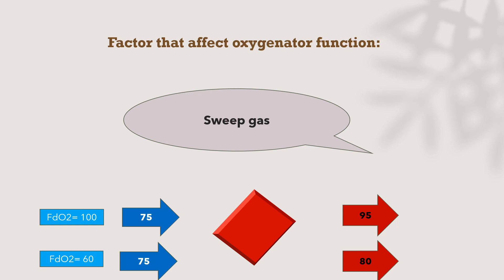Starting with sweep gas FiO2: in the first case we give 100% FiO2 with an inlet SpO2 of 75%, and the blood will come out at 95%. But if we decrease FiO2 from the ECMO side to 60%, the blood will come out of the oxygenator at 80%. So the effect of FiO2 from the ECMO side is the same as FiO2 from mechanical ventilation.